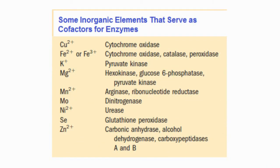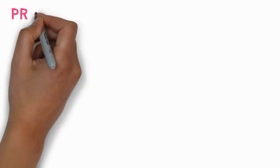Here are examples of inorganic elements. They serve as cofactors for enzymes. For example, copper is for cytochrome oxidase, iron for cytochrome oxidase and catalase, potassium, magnesium, molybdenum, nickel, selenium, and zinc. These are the elements which are used for these enzymes. The most important of them are like iron, which is used in oxidation-reduction reactions.